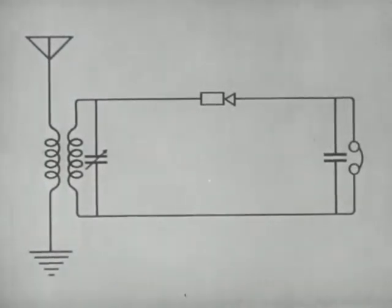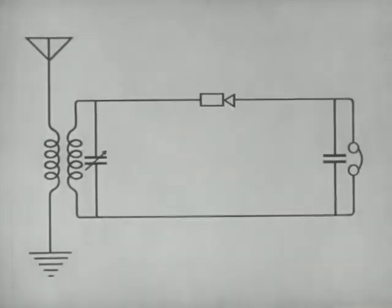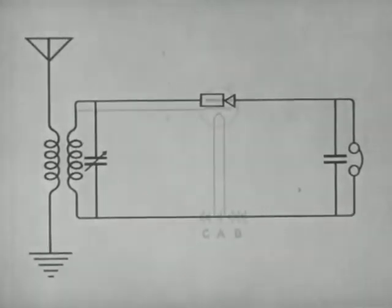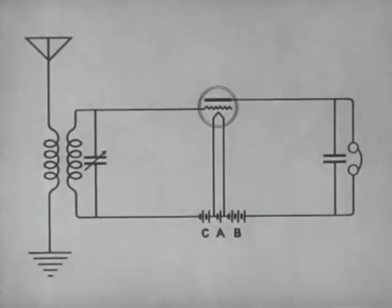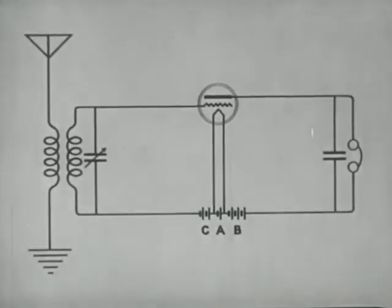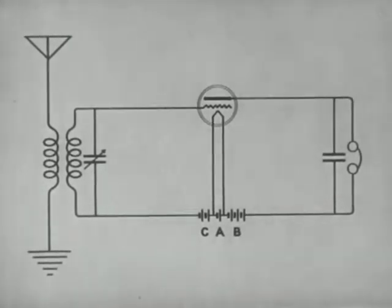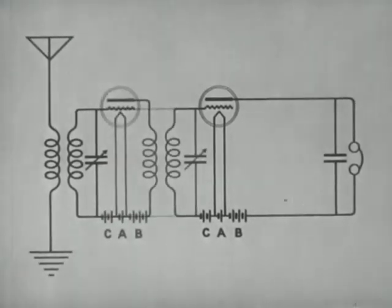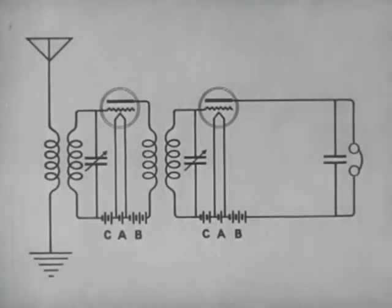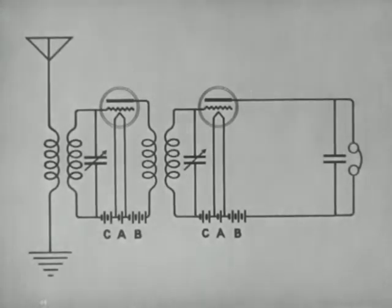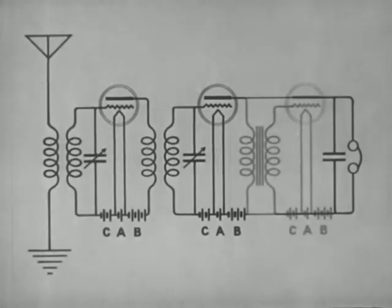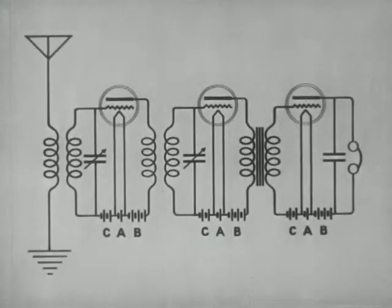Here is a diagram of a simple receiving set which uses a crystal as a detector. The vacuum tube is more efficient than a crystal because it also acts as an amplifier. If we wish a louder signal, we may add a radio frequency amplifier ahead of the detector. A still louder signal may be obtained by adding an audio amplifier after the detector. We can now use a loudspeaker instead of headphones.